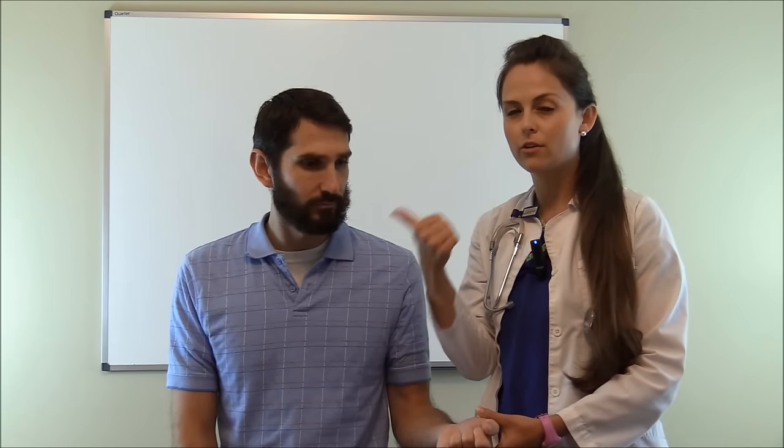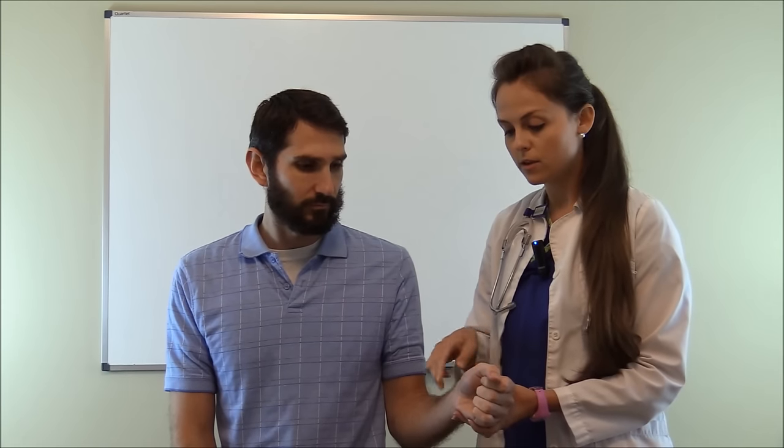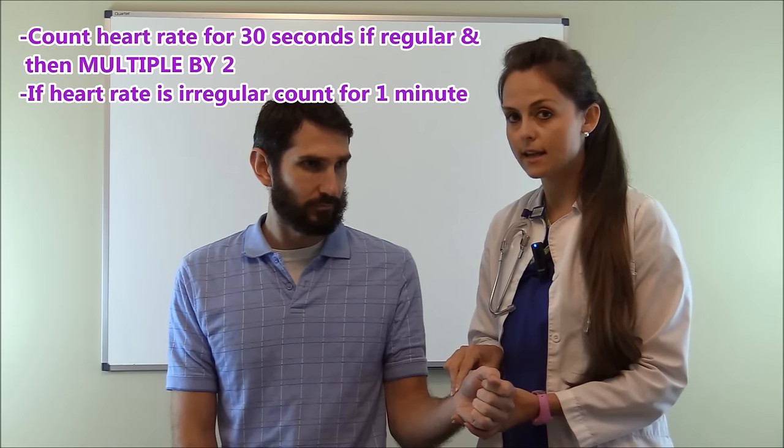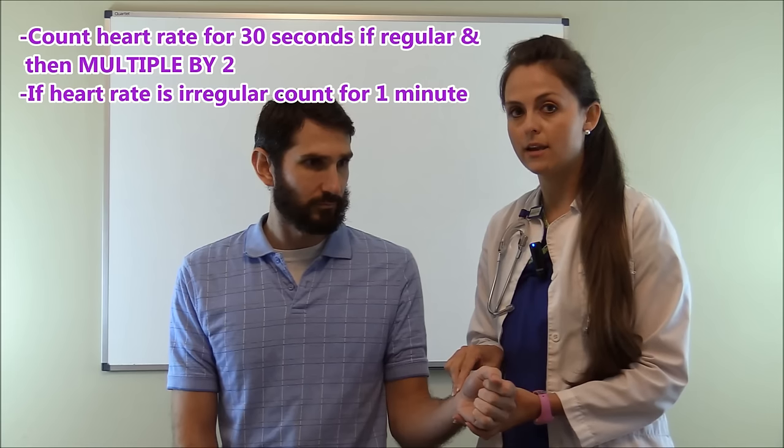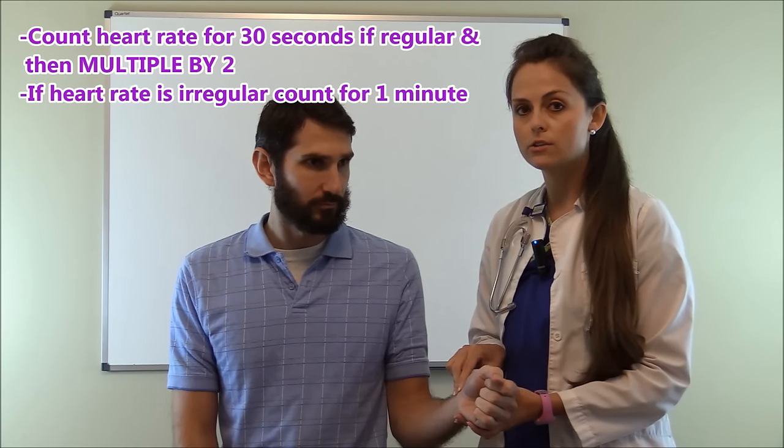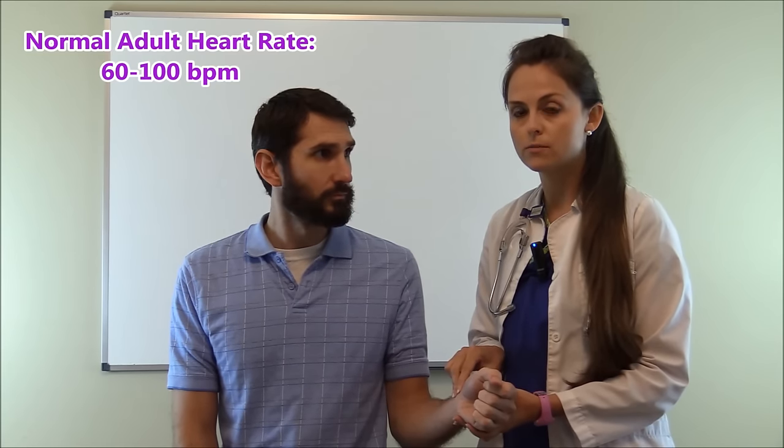I'm going to use my index finger and my middle finger. Don't use your thumb because you can feel a pulse in your thumb. So use those two fingers and just put it over in the groove of where the styloid process is and the radial artery and feel that and count for 30 seconds if it's regular. If it's irregular count for one minute and a normal pulse rate in an adult is 60 to 100 beats per minute.